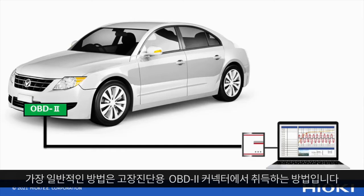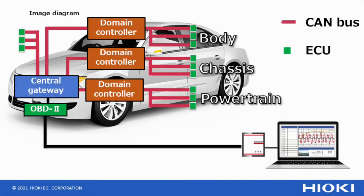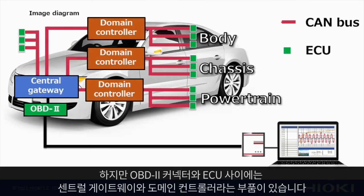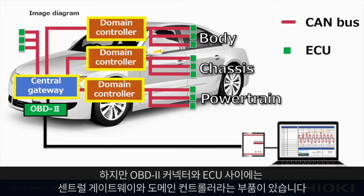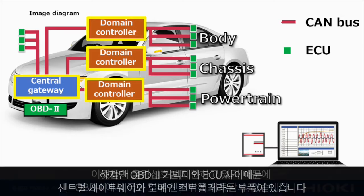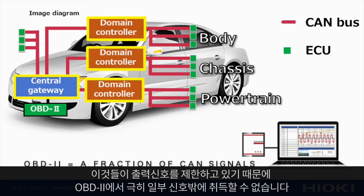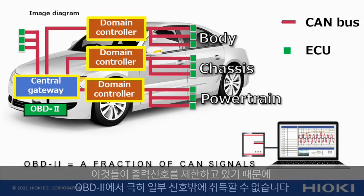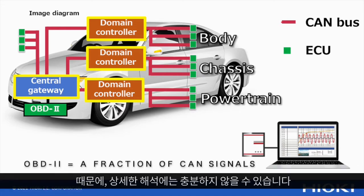How do you usually acquire CAN data? The most common method is to acquire it from the OBD2 connector. However, the central gateway and domain controllers between the OBD2 and ECUs limit the output signal. This may not be enough data for detailed analysis in modern-day research and development.